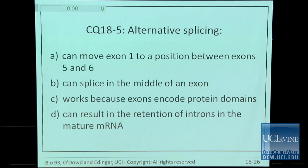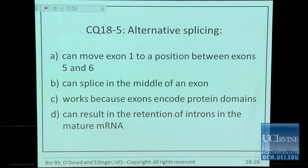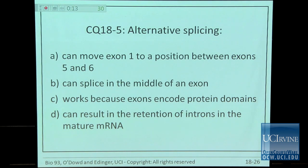Clicker question: which statement about alternative splicing is true? It can move exon 1 to between exons 5 and 6; it can splice in the middle of an exon; it works because exons encode protein domains; or it can result in the retention of introns in a mature mRNA.